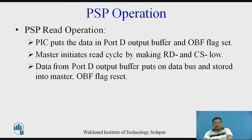The PSP operations consist of read operation and write operation — only 2 operations are possible with the slave port. In the PSP read operation, the PIC microcontroller first puts data in the Port D output buffer and sets the OBF flag. Then the master initiates the read cycle by making the read and chip select control signals low. The data from Port D output buffer is placed on the data bus, stored into the master, and the OBF flag is reset — meaning the master has read the data from the Port D slave port.